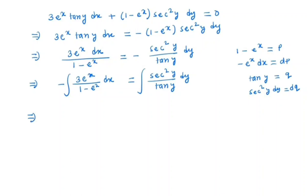So for the left hand side we have -e^x dx is equal to dp, so we have 3dp/p. And the right hand side, sec^2 y dy is equal to dq/q.